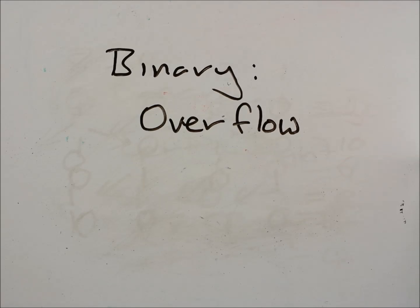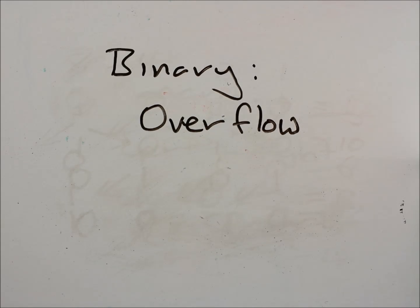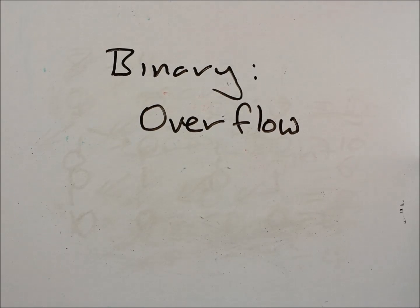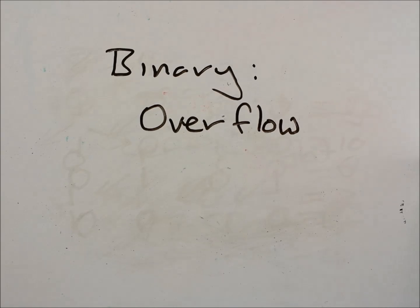This video is about binary overflow. Overflow is something that happens because a computer only has a certain number of bits to hold a number. You might sometimes have heard a processor described as 16-bit, 32-bit, 64-bit, or even 128-bit. This is a little bit more complicated, but for the moment I will say it's the number of bits that are used to hold data in the processor.